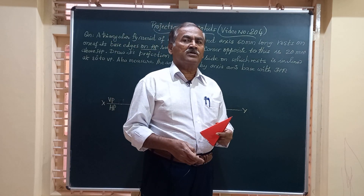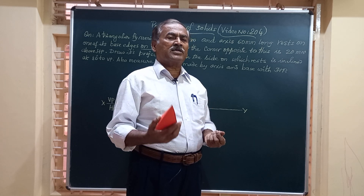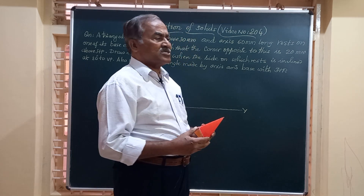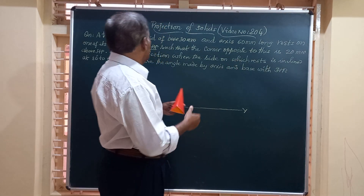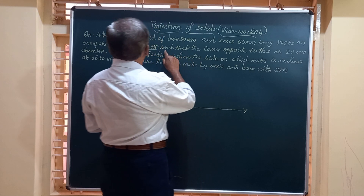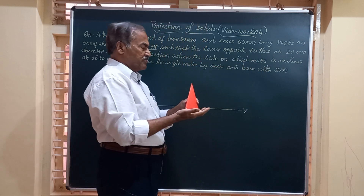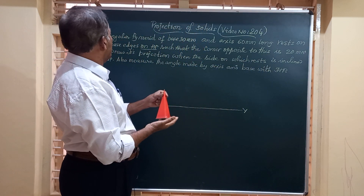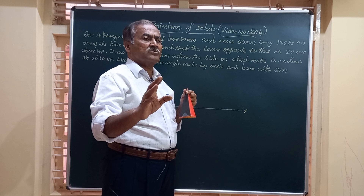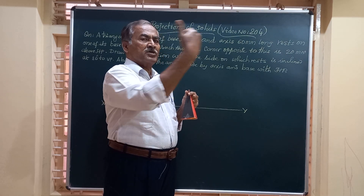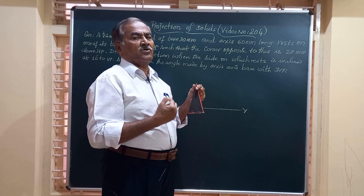The initial positioning of the object — whether it is a solid or a lamina — is very important. The problem states it is resting on HP on one of its base edges, with the edge perpendicular to VP. The corner opposite to this base edge is mentioned next. First, let us place it on HP resting on one side. Whatever side the object rests on should come towards the right side of the observer.